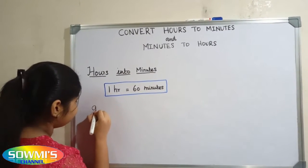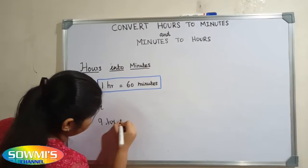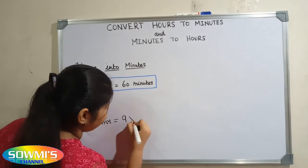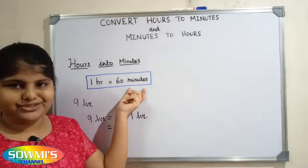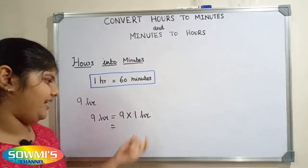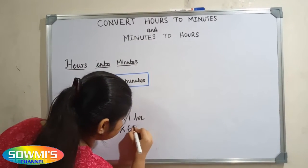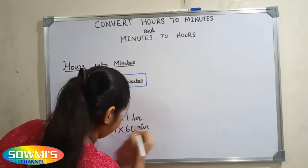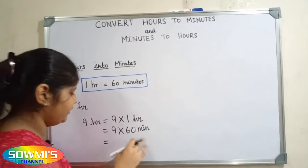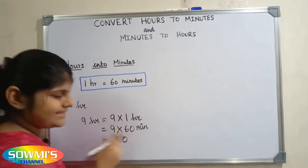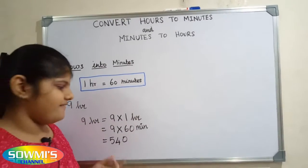For example, 9 hours. 9 hours is equal to 9 multiplied by 1 hour. Now we have to substitute 60 minutes in the place of 1 hour. So 9 multiplied by 60 minutes. 9 multiplied by 60 minutes: 9 zeros are 0, 6 nines are 54. So the answer is 540 minutes.